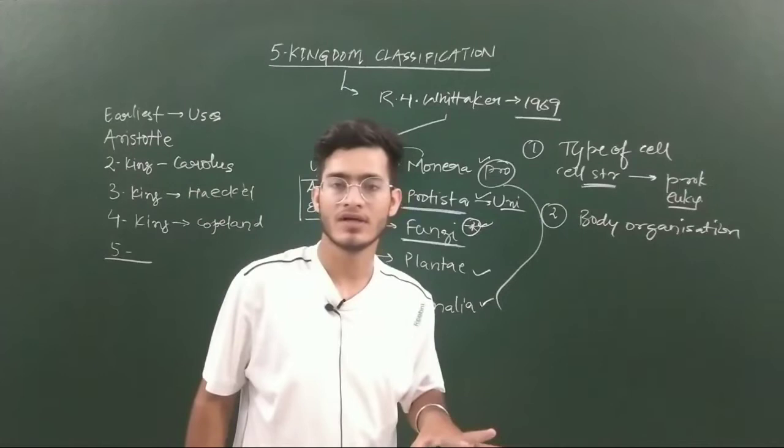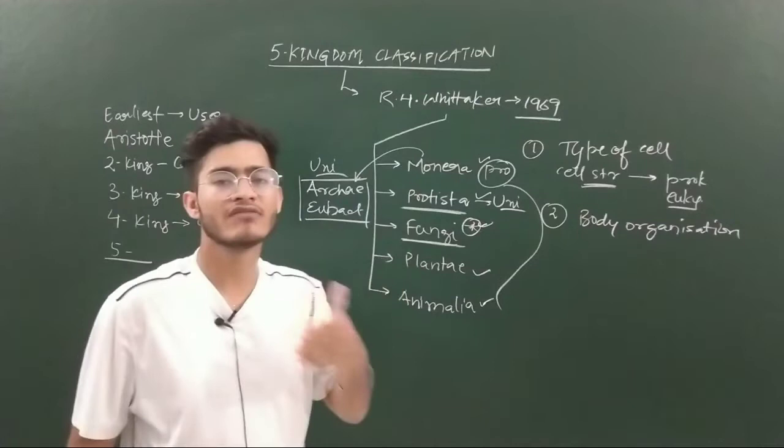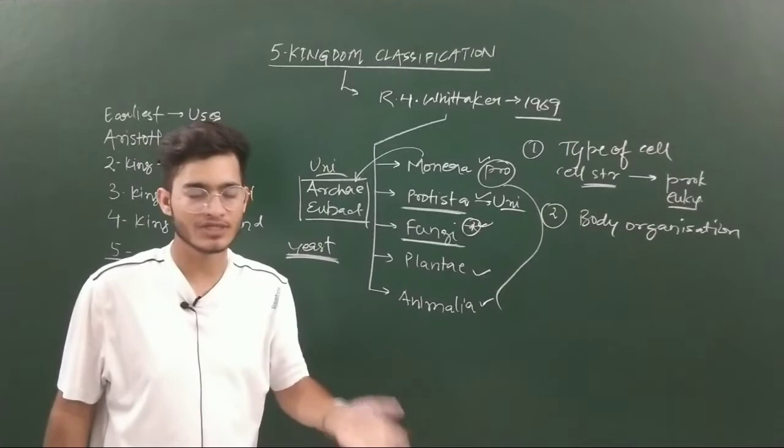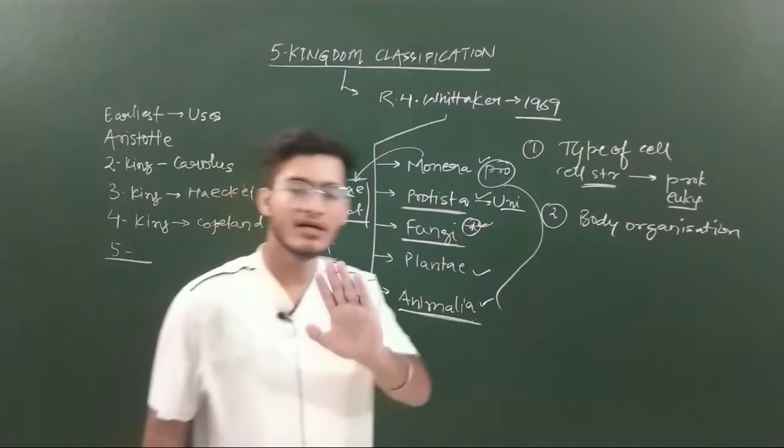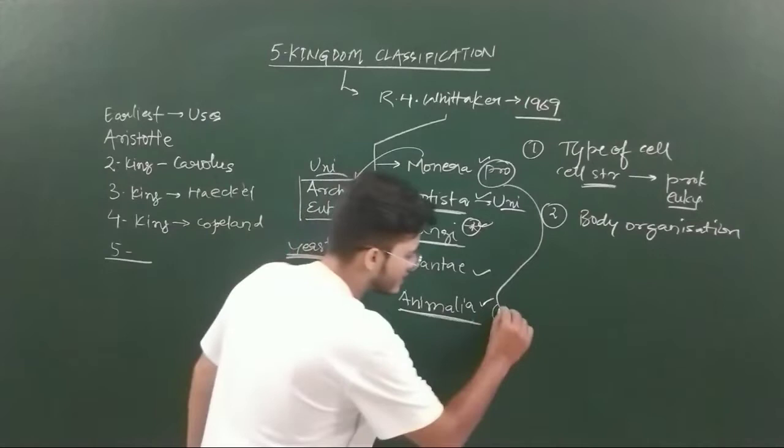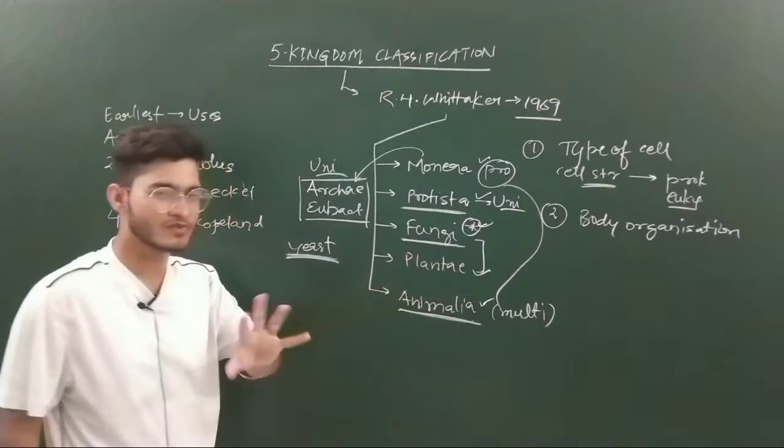In case of Fungi, Plantae and Animalia, they were multicellular in most cases. There are exceptional cases - for example Saccharomyces cerevisiae or yeast is unicellular. In Plantae there were some minute algae which are unicellular. But in the animal kingdom, all animals are strictly multicellular - you cannot say that an animal is unicellular, that is not possible.